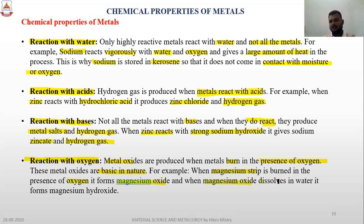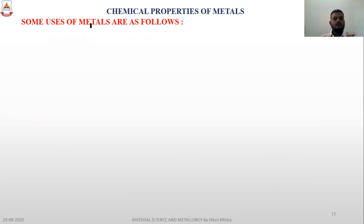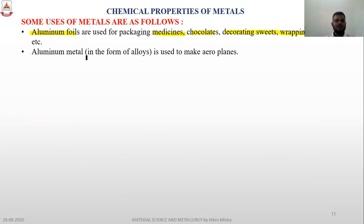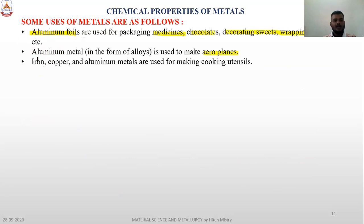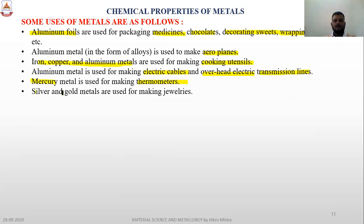When magnesium oxide dissolves in water, it forms magnesium hydroxide. These are the various reactions of metals with water, acids, bases, and oxygen. Some uses of metals: aluminium foil is used for packaging, medicine, chocolates, and wrapping food; aluminium is used for making aeroplanes; iron, copper, and aluminium are used for cooking utensils; aluminium is used for electric cables and overhead transmission lines; mercury is used for thermometers; silver and gold are used for jewelry; zinc is used for galvanizing iron to protect it from rusting.